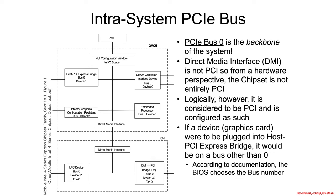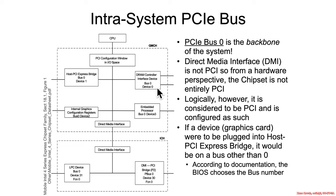Returning to this diagram showing a memory controller hub and an IO controller hub, I like this because it shows these internal PCIe devices. The two things we care about are the DRAM controller, which is bus 0 device 0, and the LPC device, which is bus 0 device 31 function 0.